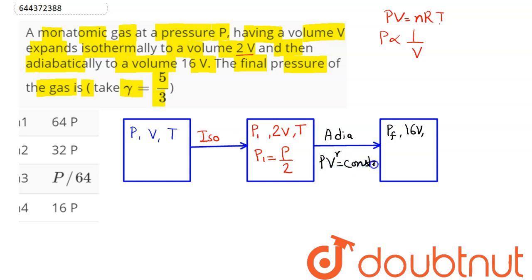So this can be written as P1 into V1 raise to power gamma equals P2 into V2 raise to power gamma. Now P2 is the final pressure which is given as P1 into V1 by V2 hold to the power gamma.